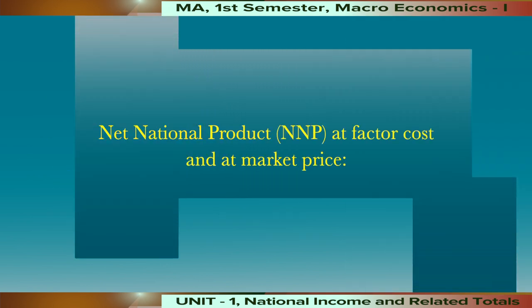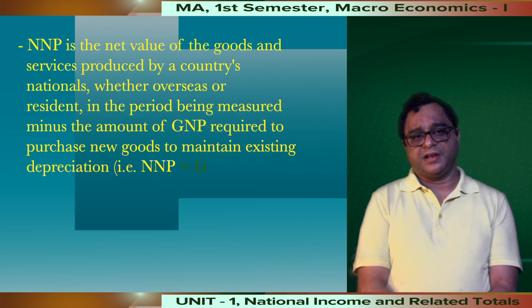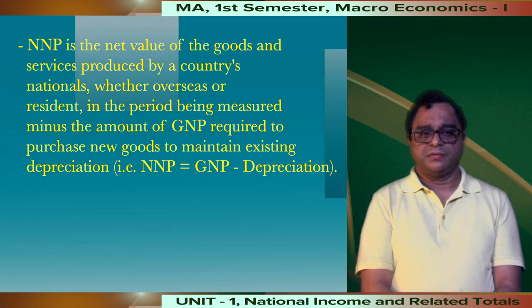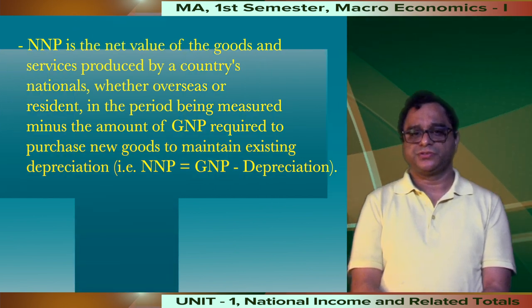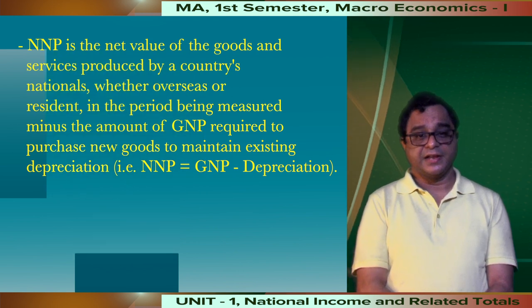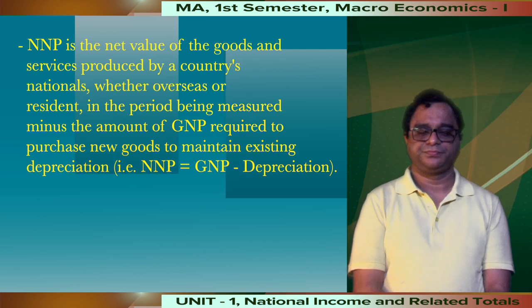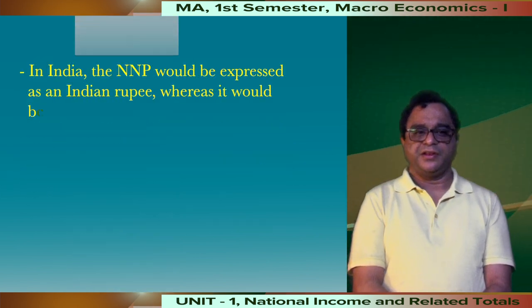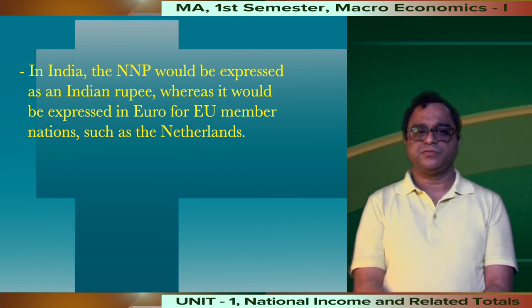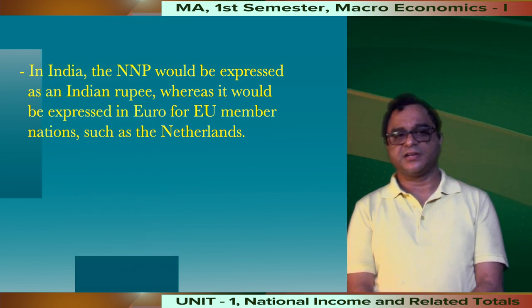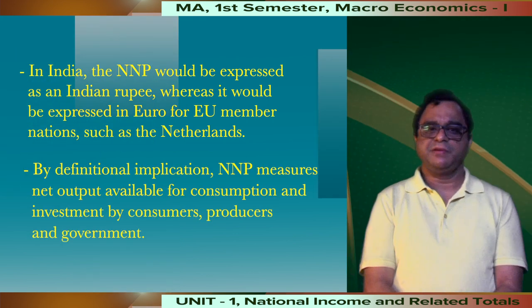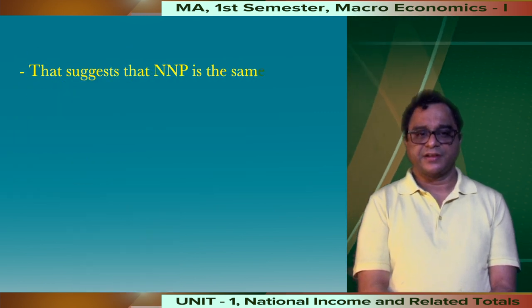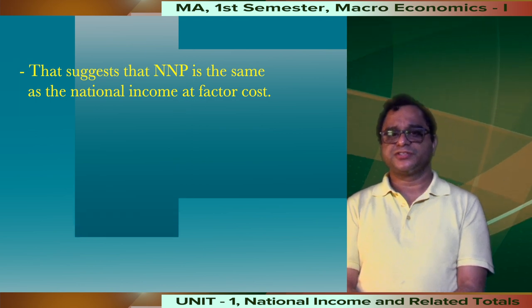Net National Product at factor cost and at market price: Net National Product is the net value of all goods and services produced by a country's nationals, whether overseas or resident, in the period being measured, minus the amount of GNP required to purchase new goods to maintain existing depreciation. That is, NNP equals GNP minus depreciation. NNP is expressed in the currency of the nation it represents — for example, Indian rupees for India, or Euro for EU member nations such as the Netherlands. By definitional implication, NNP measures net output available for consumption and investment by consumers, producers, and government, and is the same as national income at factor cost.